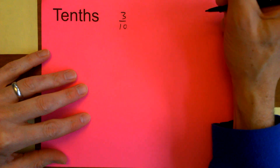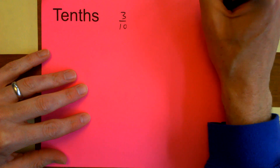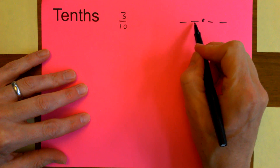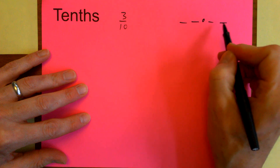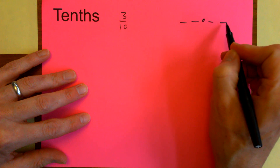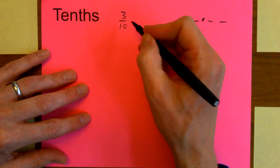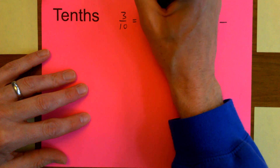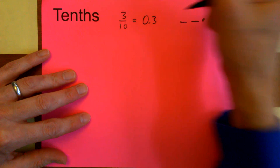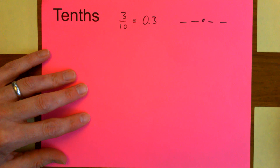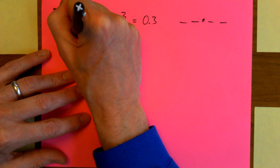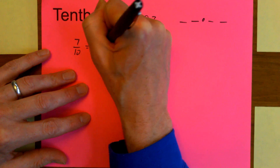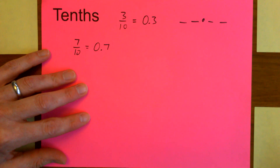So if we have our decimal here, with numbers on either side: this is the ones place, the tens place, here's the tenths place, hundredths place. So if I have the fraction three-tenths, no problem — just put the three in the tenths place. Or if I have the fraction seven over ten — seven-tenths — just put the seven in the tenths place. Piece of cake.